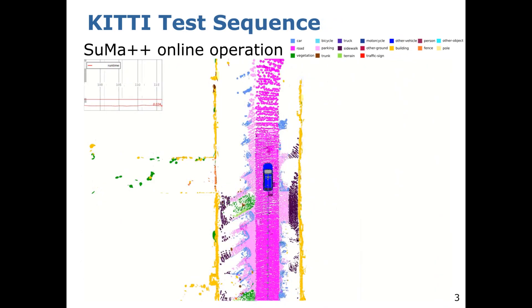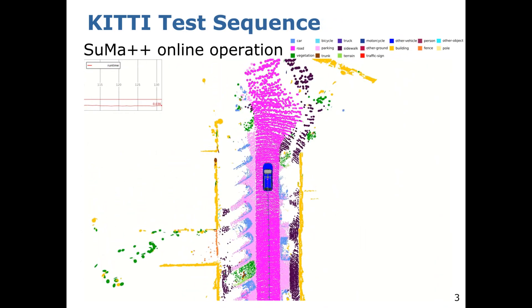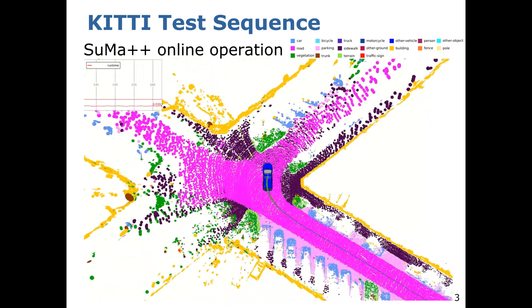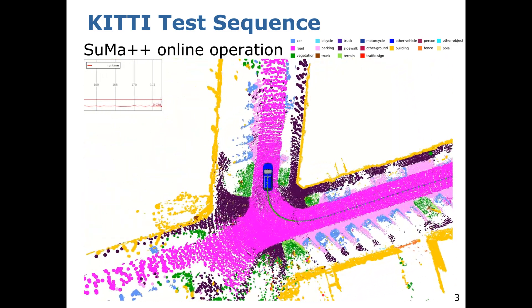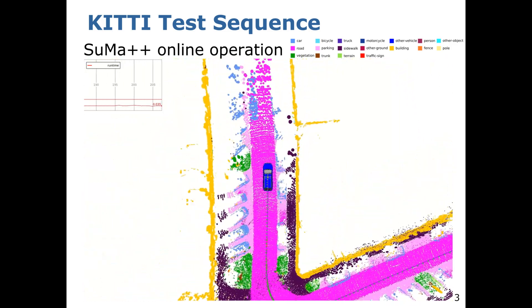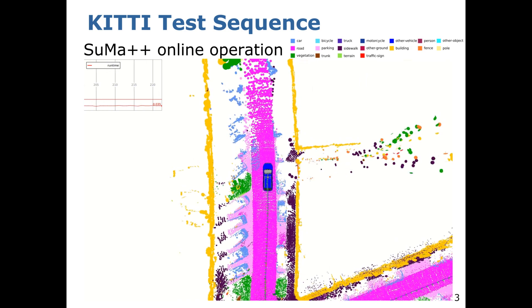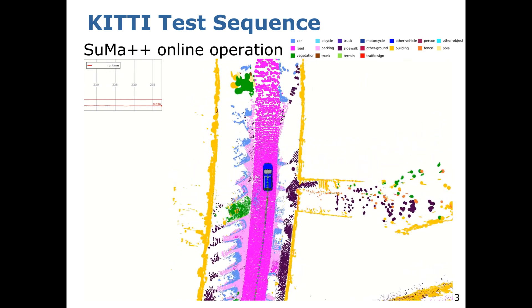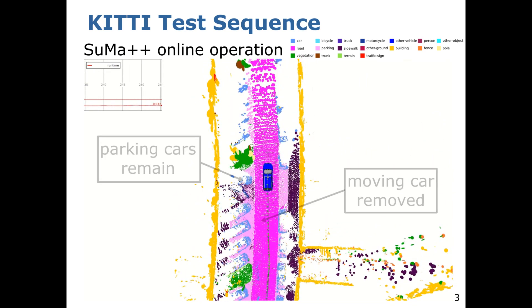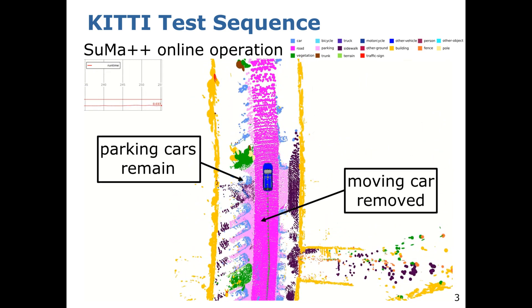This is an example of how our approach runs online and estimates the geometric information about the environment together with the semantic information. This allows us, for example, to eliminate moving cars from the map while keeping parked cars.